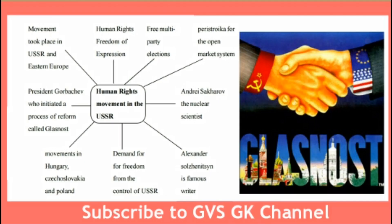Before going to discuss our topic, first we have to see the same topic in brain mapping method. Our topic is Human Rights Movement in the USSR. The keywords related to this movement — what we are going to discuss mainly — we have to see here.